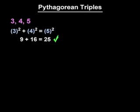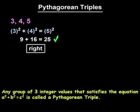Therefore, a triangle that has sides with lengths of 3, 4, and 5 must be a right triangle by the converse of the Pythagorean Theorem. Note that any group of 3 integer values that satisfies the equation a squared plus b squared equals c squared, such as 3, 4, and 5, is called a Pythagorean triple.